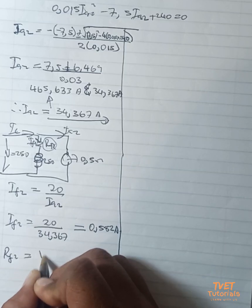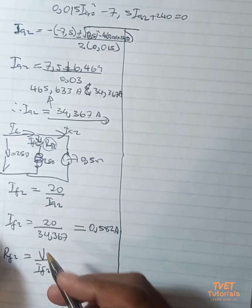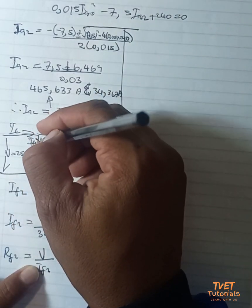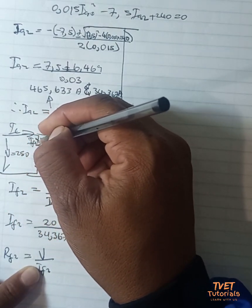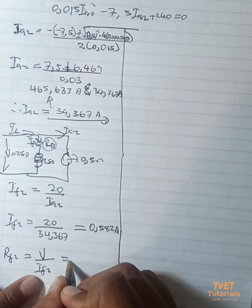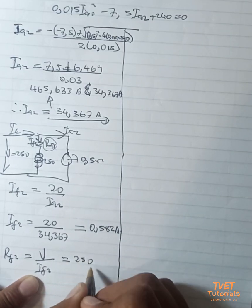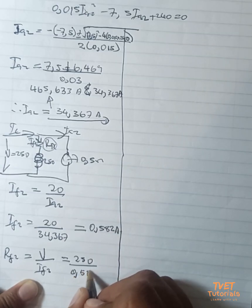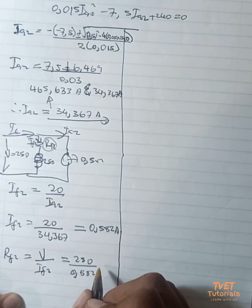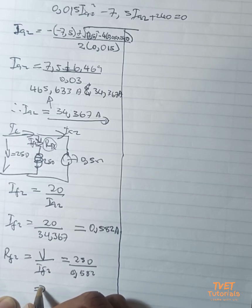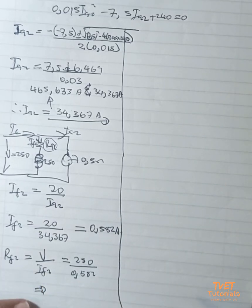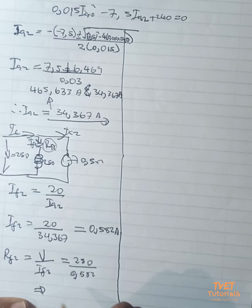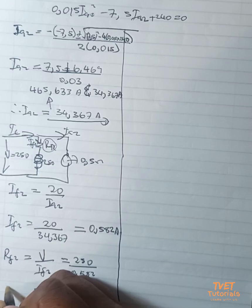which is what we just calculated there - it's the current that is flowing through that. So this is equal to 250 divided by 0.582, and this gives you your field resistance.